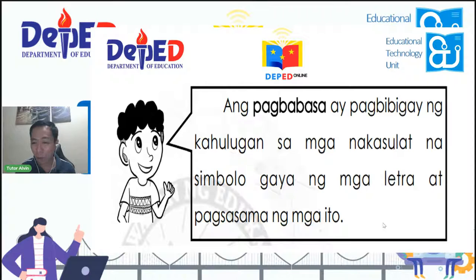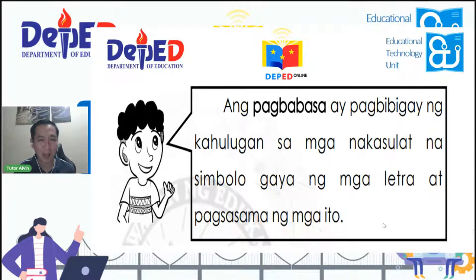Importante ang pagbabasa. Bakit importante ang pagbabasa? Kasi hindi sa lahat ng oras tayo ay nakikinig lamang. Dapat alam din natin basahin ang mga nakikita natin sa paligid. Halimbawa, pumupunta tayo sa kalye — may mga nakikita tayo sa ating paligid na dapat alam nating makabasahin. Dahil ito ay nagbibigay sa atin ng impormasyon kung saan tayo pupunta, kung ano ang ating gagawin, kung ano ang bawal, kung ano ang tama na gawin habang tayo ay nasa labas ng ating mga bahay.